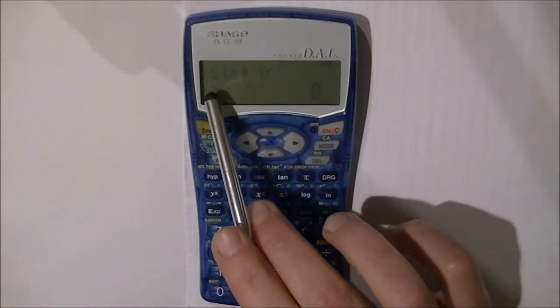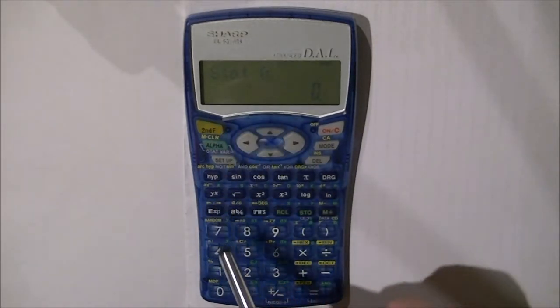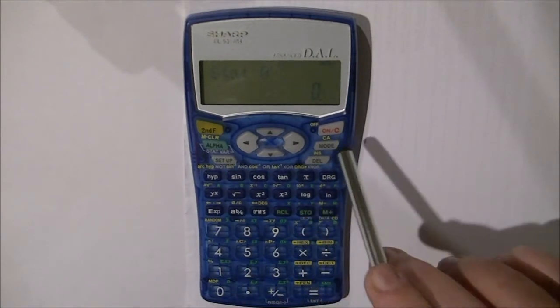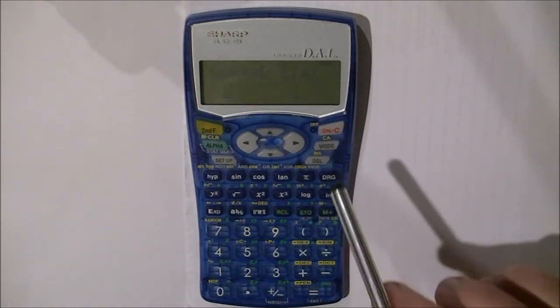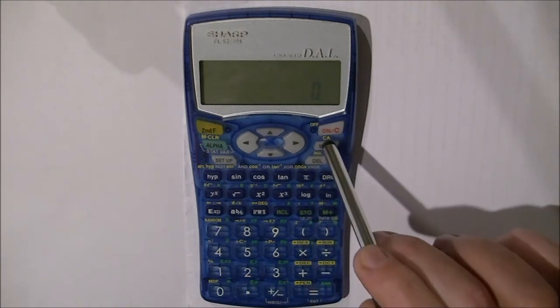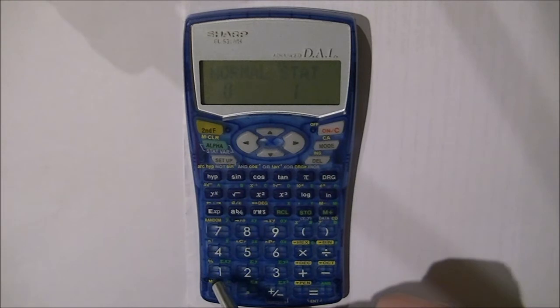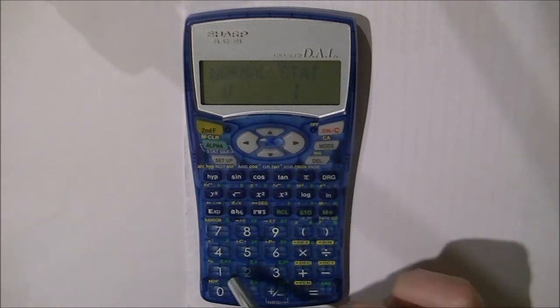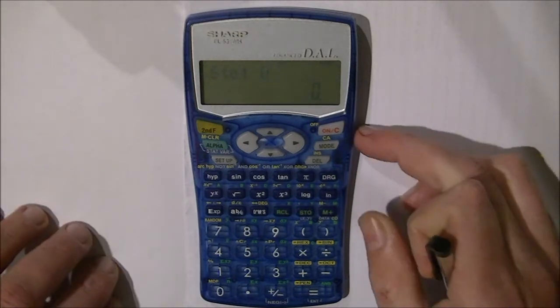Stat 0 indicates that you're in the statistics mode of standard deviation and we're ready to go. So if we want to change back we press mode normal and we're back out of statistics mode. But we want to be in statistics mode so we can do the next couple of examples. So mode stat 1 and then sd 0 and we're at stat 0.